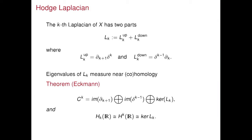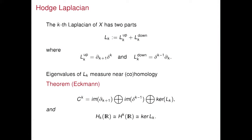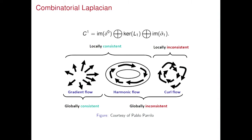The Hodge Laplacian has two parts: an up part and a down part. The up part hits with the co-boundary to go up, then hits with the boundary to come back down. The down part first hits with the boundary to go down, then the co-boundary to go back up. In more calculus terms, this is Eckmann's theorem — the Hodge decomposition: any co-chain can be written as a direct sum of the kernel of the Hodge Laplacian, the image of the co-boundary from above, and the image of the boundary from below. For the one-Laplacian, you can break things down into gradient flow, harmonic flow from the kernel, and curl-like parts — analogous to div-grad-curl.